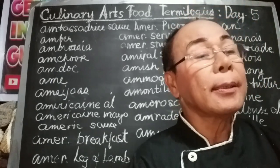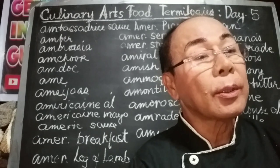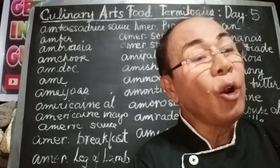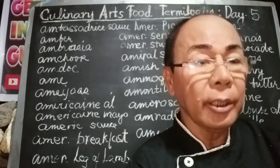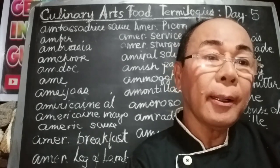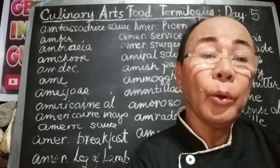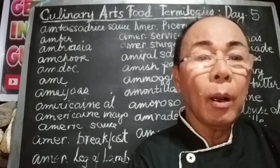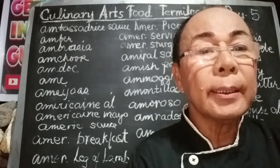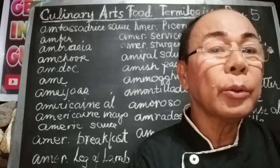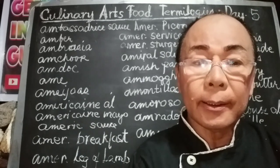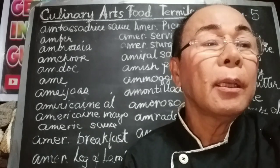Anchovies are a type of small fish from the herring family, found in the Mediterranean Sea and southern Europe, with a blue-green skin, long snout, and large mouth. They are usually available pickled and salted.